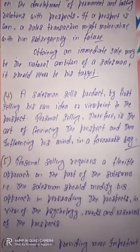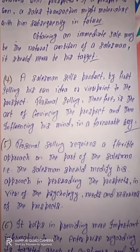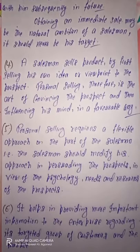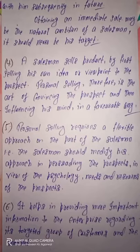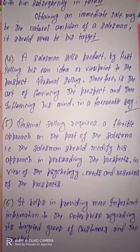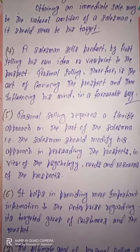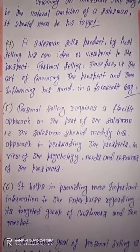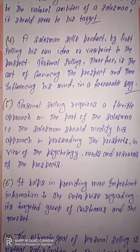The next feature is that personal selling helps in providing important information to the enterprise regarding its targeted group of customers and the market. Personal selling ke basis par salesman se different types of feedback lete hain, aur yah feedback targeted group of customers ke behavior aur market ke changing patterns ke baare mein important information provide karta hai, jiske basis par future policies aur strategies maintain ki ja sakti hain ya existing strategies mein changes focus kiye ja sakte hain.